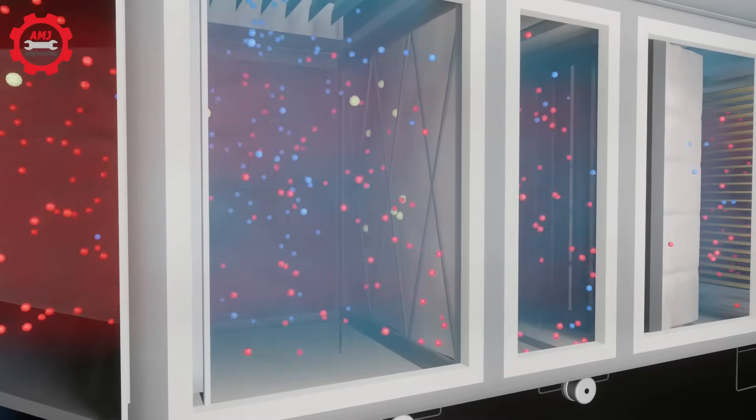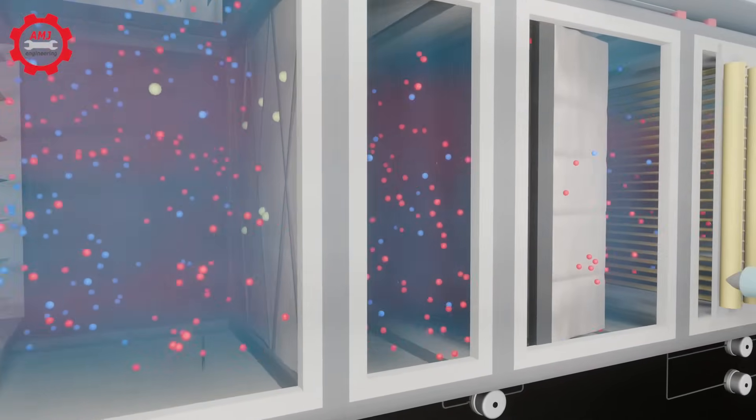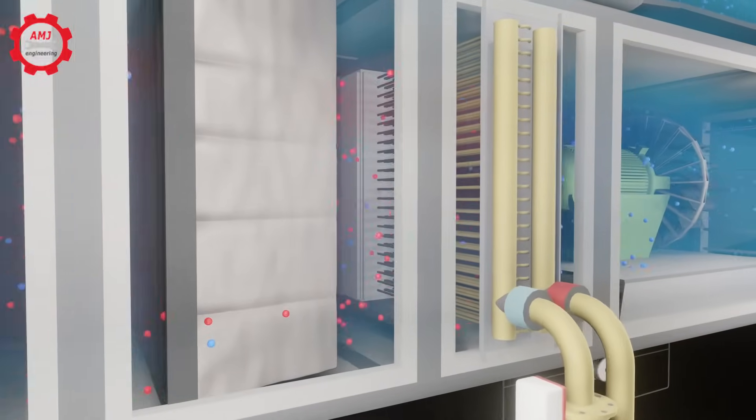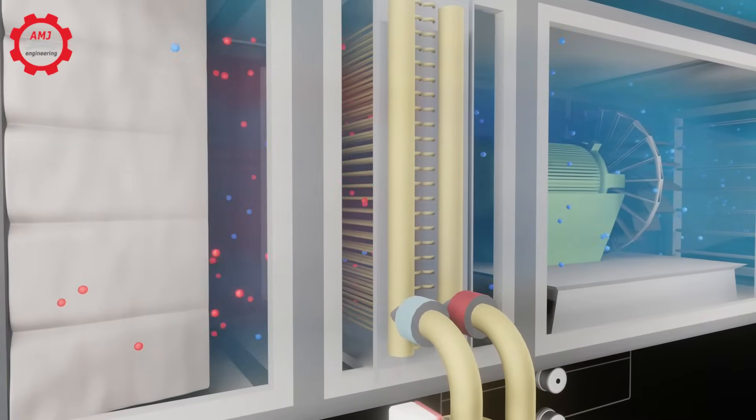It is common for an air handler to include a pre-filter and final filter setup, where a less efficient air filter is used to clean the air before it passes through a high-efficiency final filter.